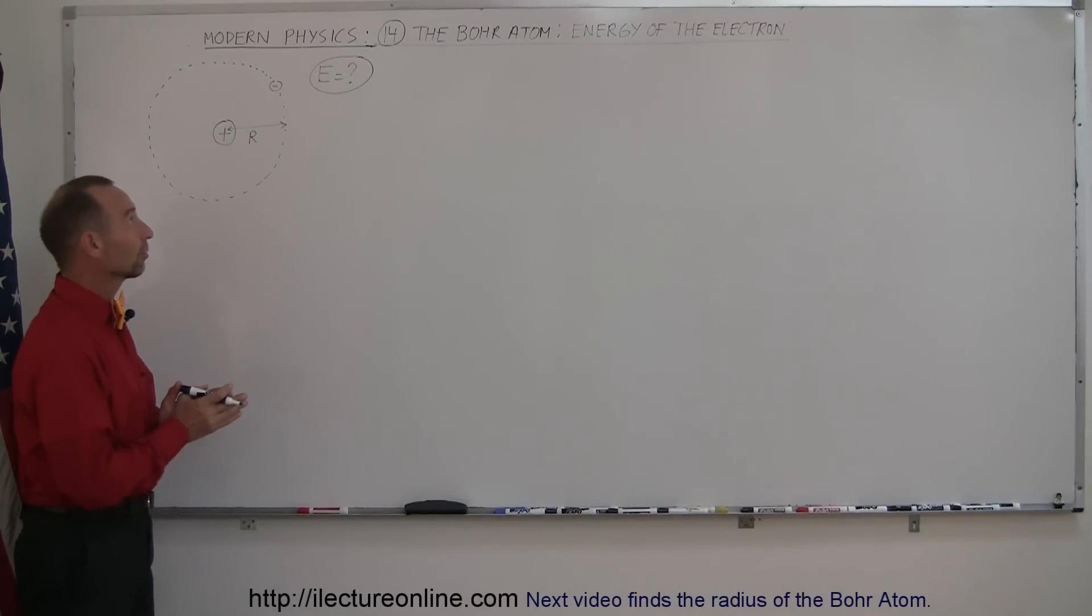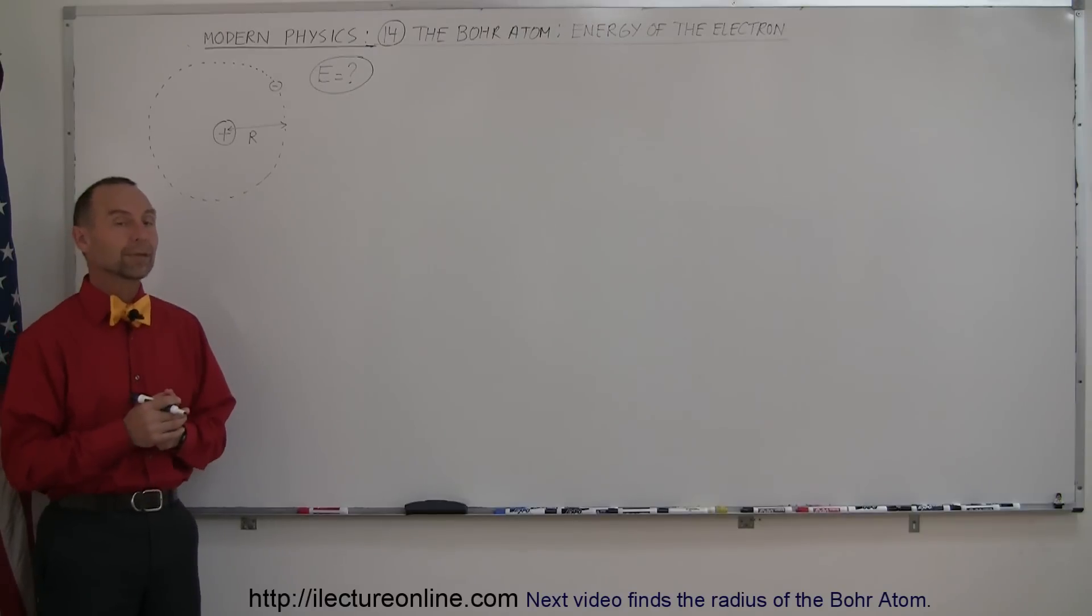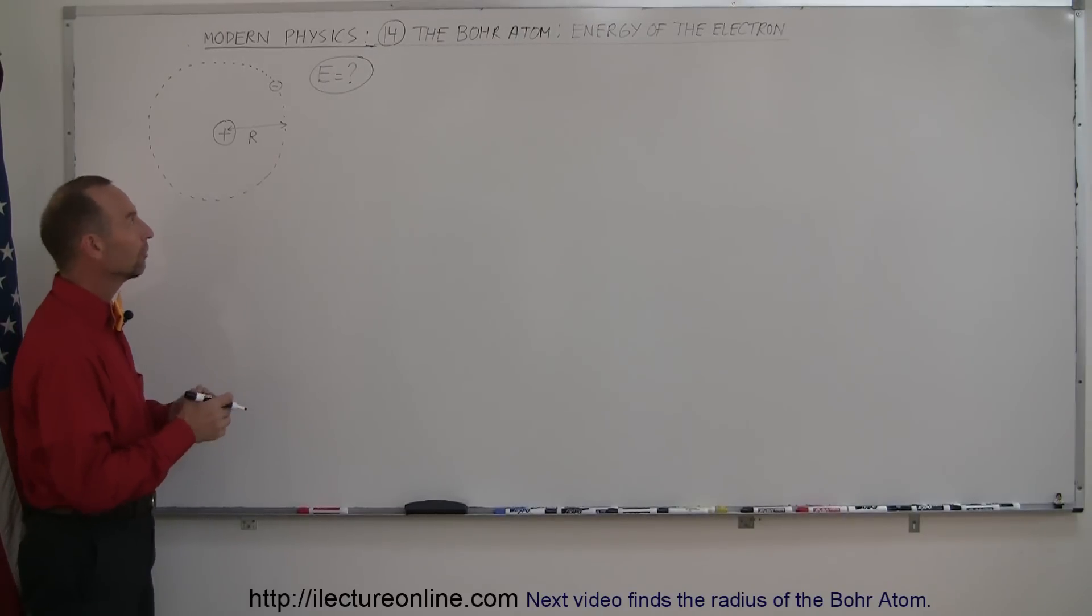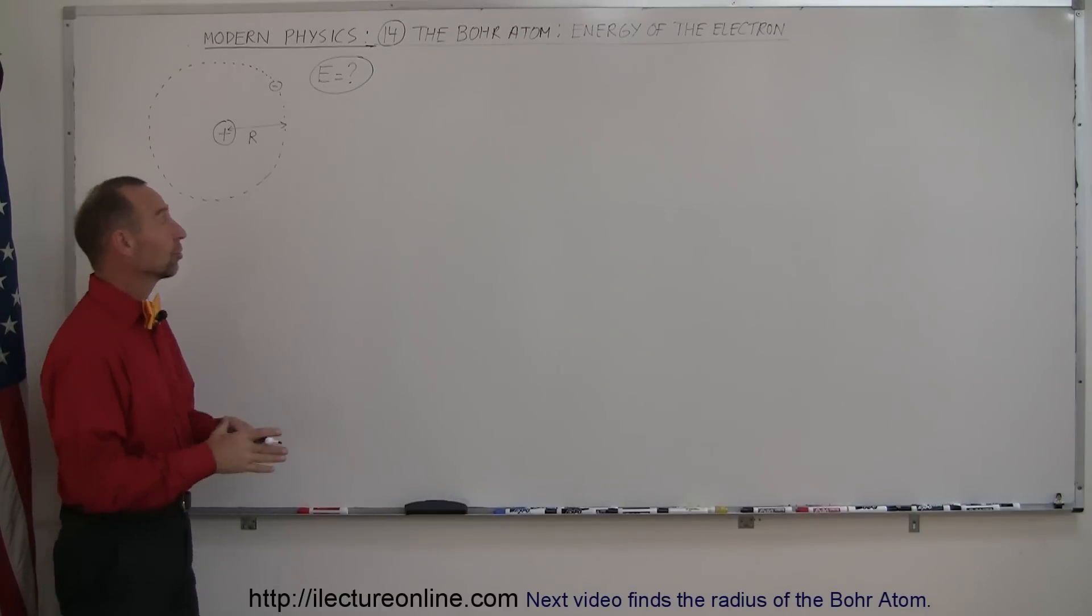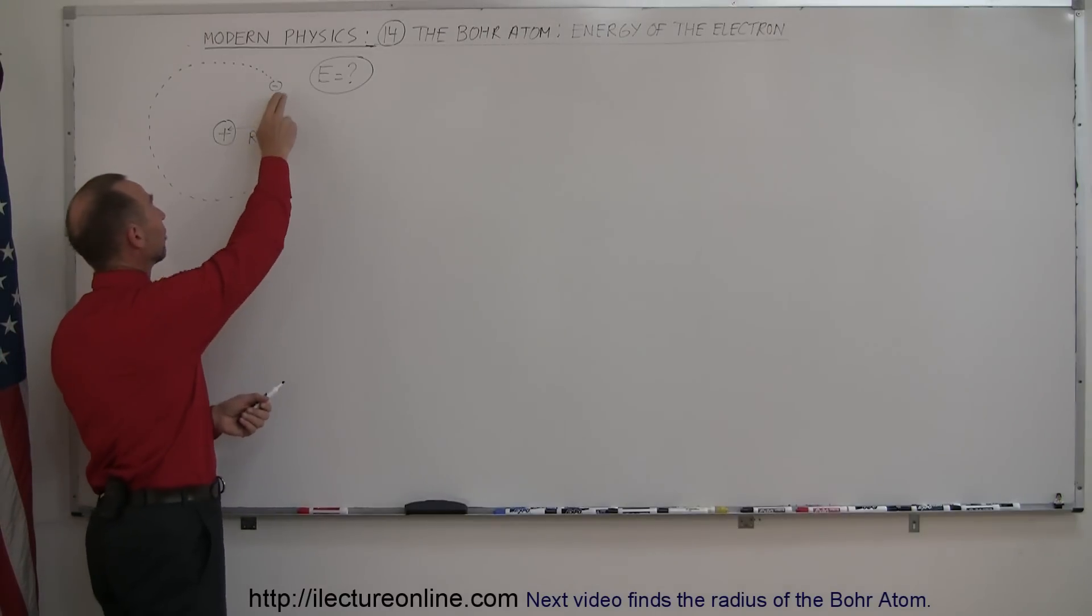Our next topic in modern physics is the Bohr atom. Now the Bohr atom is not a real atom, it's a model of the atom. The simplest atom in the universe is a hydrogen atom which consists of a single proton and a single electron.